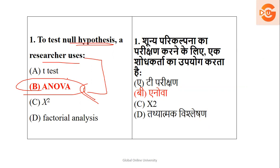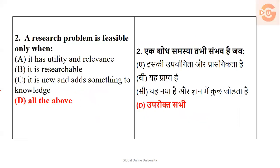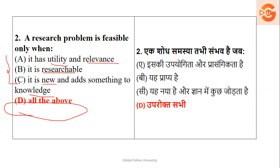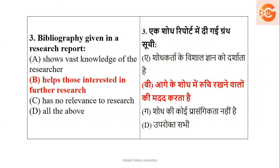Question two: a research problem is feasible only when it has utility, relevance, is researchable, and is new or adds something to the knowledge. These are all features of research — utility, relevance, researchable, and new. So the answer is option D: all of the above.